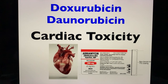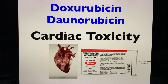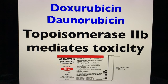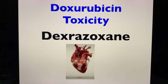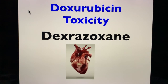What about doxorubicin or daunorubicin? This antineoplastic is notorious for causing cardiac toxicity. The exact mechanism behind the toxicity with doxorubicin is mediated by the enzyme topoisomerase-2b. Topoisomerase-2b mediates cardiac toxicity. The antidote for doxorubicin toxicity is dexrazoxane.